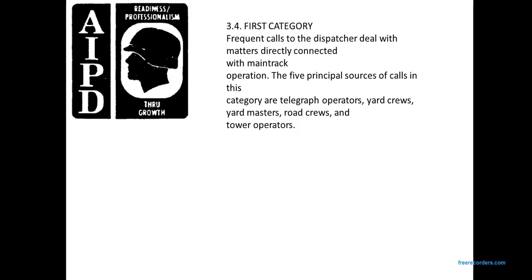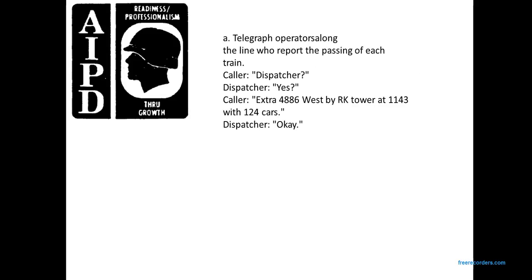The first category of frequent callers deals with materials directly connected with mainline track operation. The five principal sources of calls are: telegraph operators, yard crews, yardmasters, road crews, and tower operators. A telegraph operator along the line reports the passing of each train. Example: Caller says 'Dispatcher.' Dispatcher says 'Yes.' Caller says 'Extra 4886 West by RK Tower at 11:43 with 124 cars.' Dispatcher says 'Okay.'